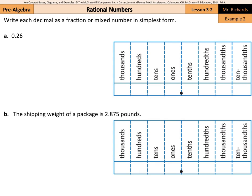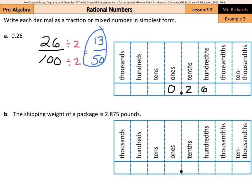Next, we have: write each decimal as a fraction or mixed number in simplest form. Let's take our twenty-six hundredths and put it in our place value chart. We have zero and at the decimal point two six, so this number is twenty-six hundredths. We write the fraction as twenty-six hundredths. To get this into simplest form, we divide out the common factor of two, and we get an answer of thirteen over fifty. So looking at the place value can really help us: twenty-six hundredths turns into twenty-six over one hundred, simplified to get thirteen-fiftieths.